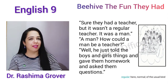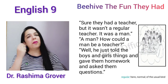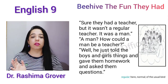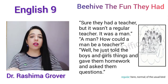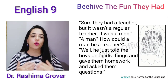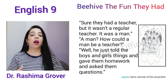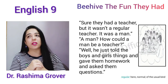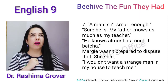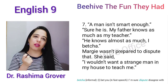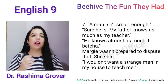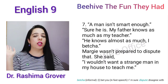'How could a man be a teacher?' — Ek man teacher kaise ho sakta hai? 'Well, he just told the boys and girls things and gave them homework and asked them questions.' Woh jo human teacher hota tha, woh girls aur boys ko saari information diya karta tha, homework diya karta tha, aur bohut saare questions bhi puchha karte the. 'A man isn't smart enough.' Margi ko lagta tha ki ek man itna smart kaise ho sakta hai — computer dekho kitna smart hota hai.